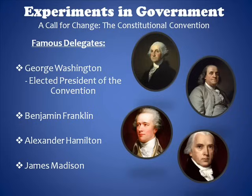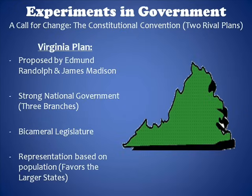Soon after the convention began, the delegates realized they would have to do much more than simply revise the Articles of Confederation. They would have to write an entirely new constitution, which would completely change the way government was handled in the 13 states. Now that delegates agreed they needed a strong central government, the idea of representation came into play.